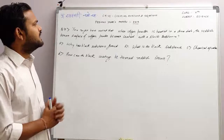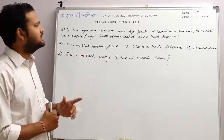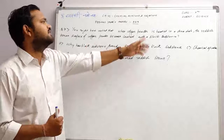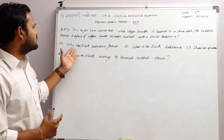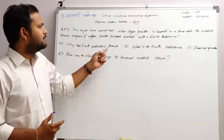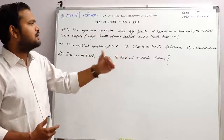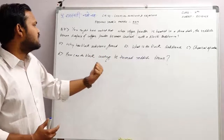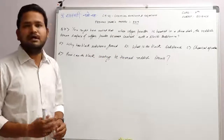You might have noted that when copper powder is heated in a china dish, the reddish brown surface of copper powder becomes coated with a black substance. Why has the black substance formed? What is the black substance? What is the chemical equation? How can the black coating be turned into reddish brown?